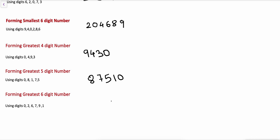Greatest 6-digit number using digits 0, 2, 6, 7, 9, 1 — writing in descending order: 9, 7, 6, 2, 1, 0. This is the greatest 6-digit number formed: 976210. So the concept is very clear.